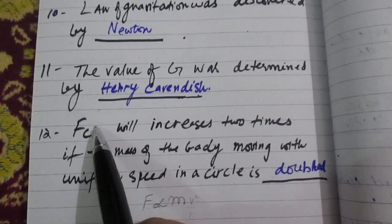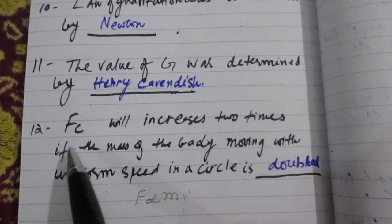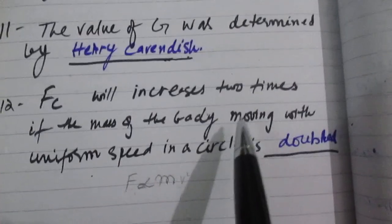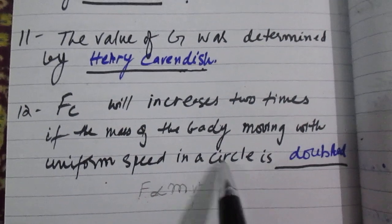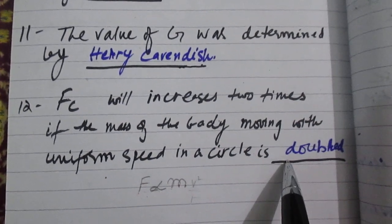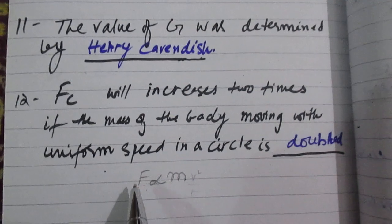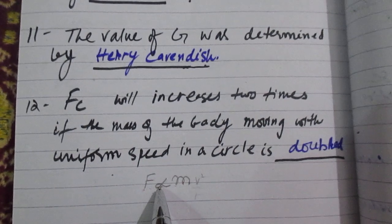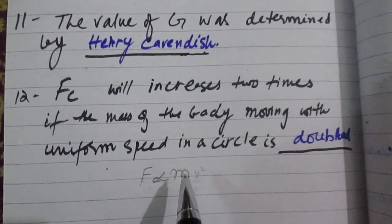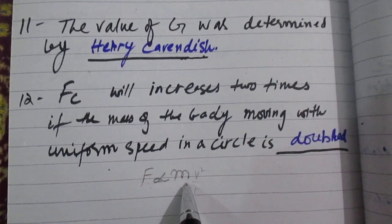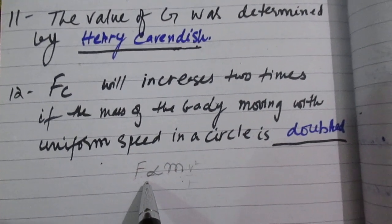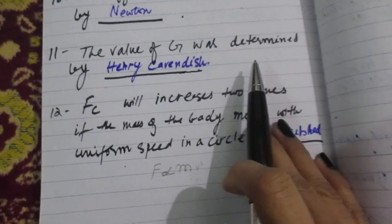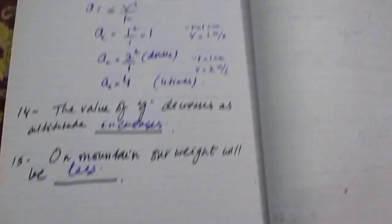The centripetal force will increase two times if the mass of the object moving with uniform speed in a circle is doubled. According to Newton's second law, force is directly proportional to mass. If mass is doubled, then force will be two times. If mass increases, force increases. If mass decreases, force decreases, because it is directly proportional.